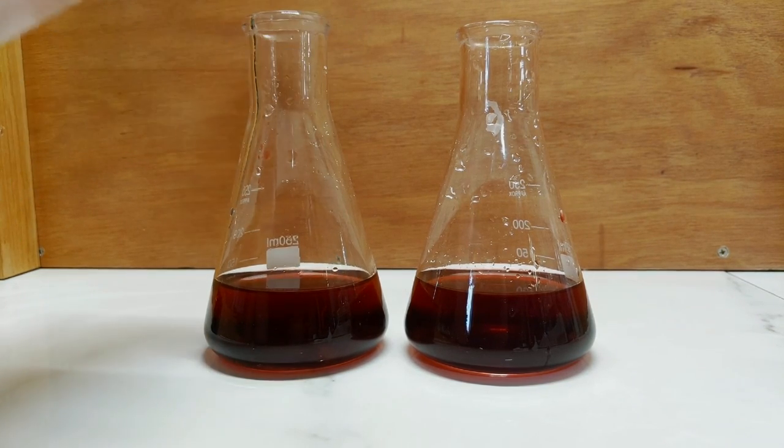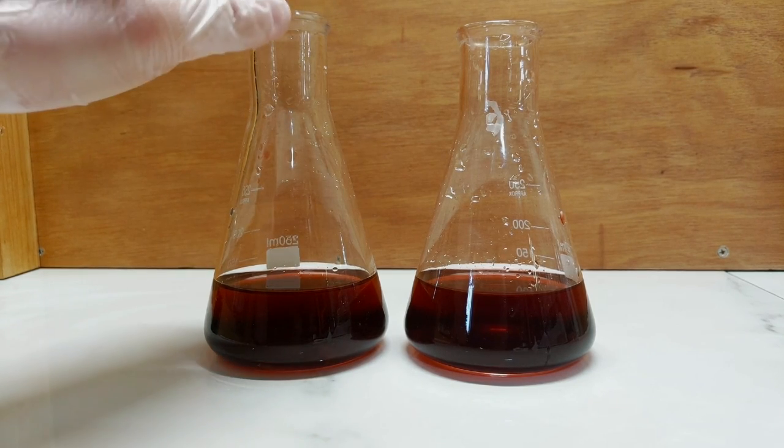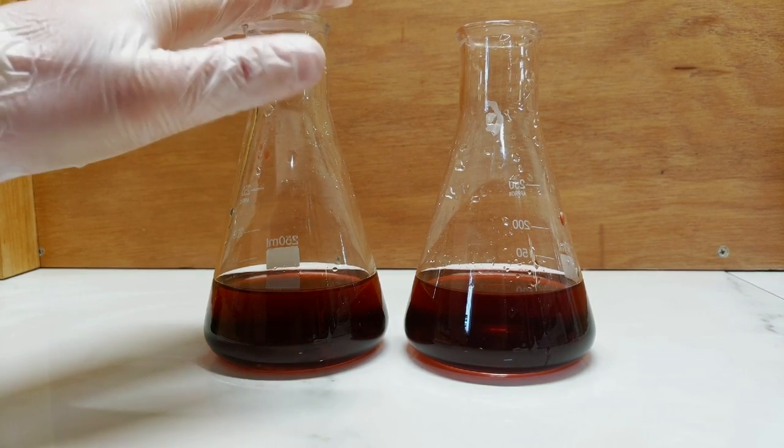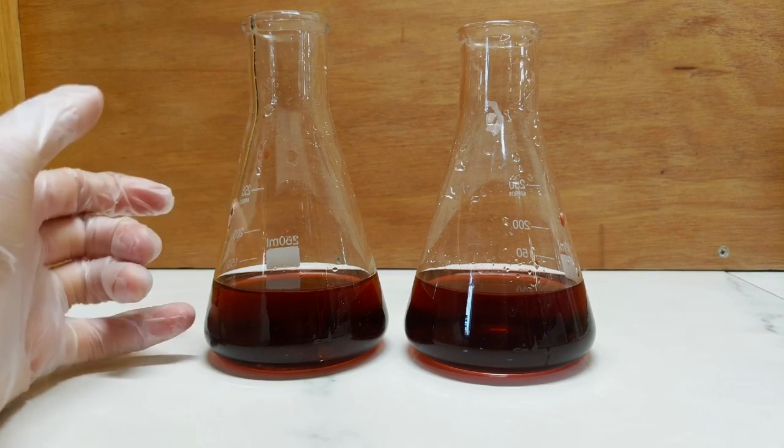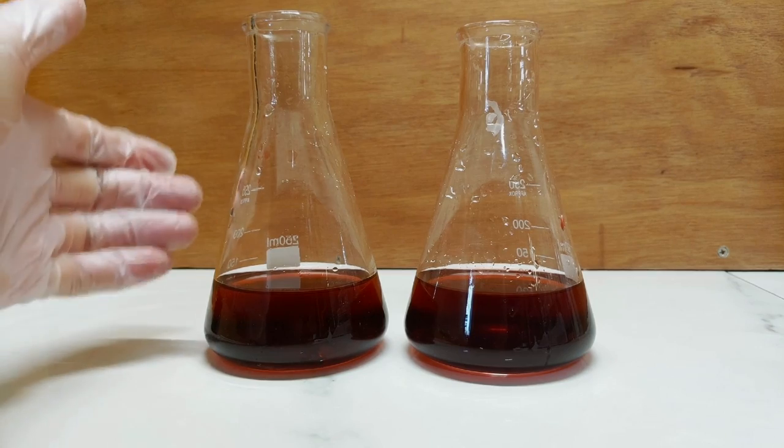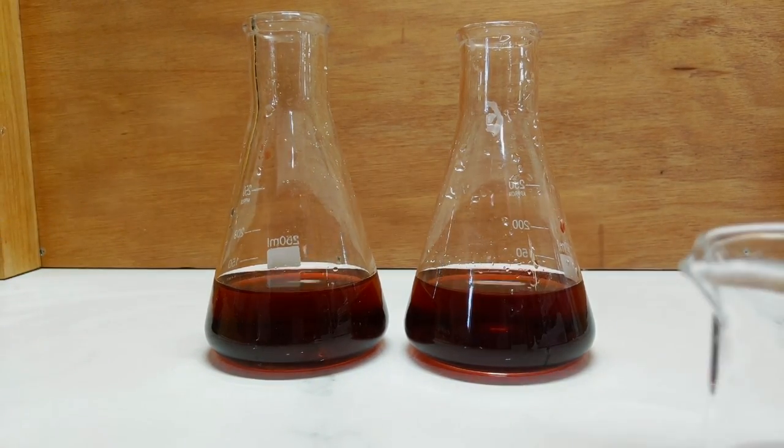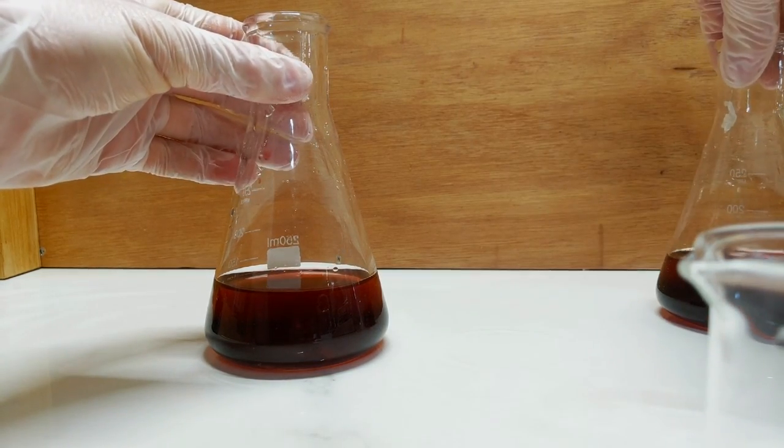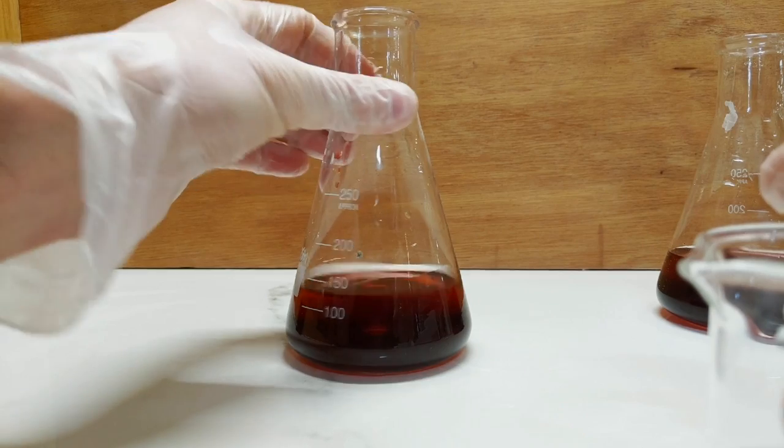And now we're going to basify these with an alkali, so I'm going to be using ammonia, just regular store-bought ammonia from the supermarket, and that should then start to precipitate out our cobalt ammonia phosphate, which will be our violet pigment. Pop that one to the side for the moment, and we'll just focus on this guy here.